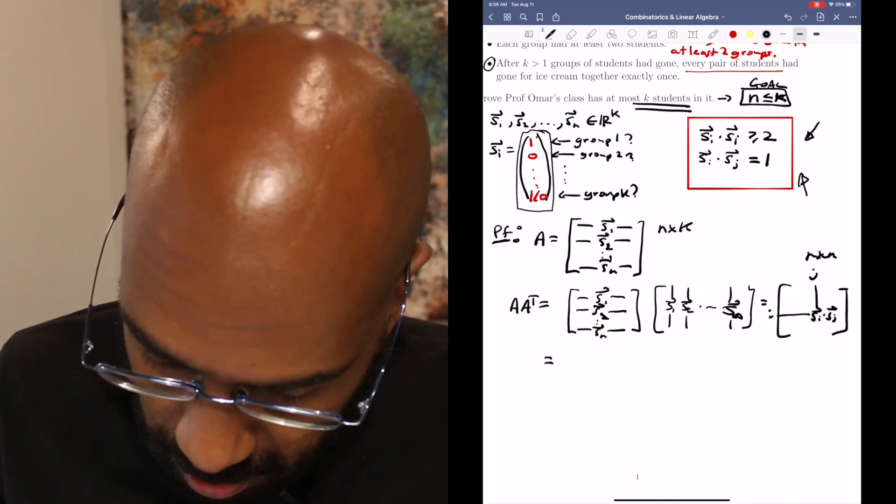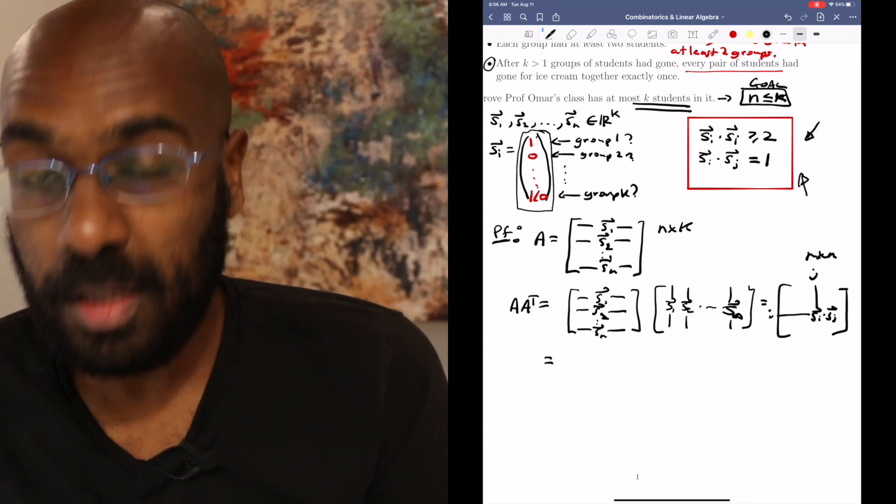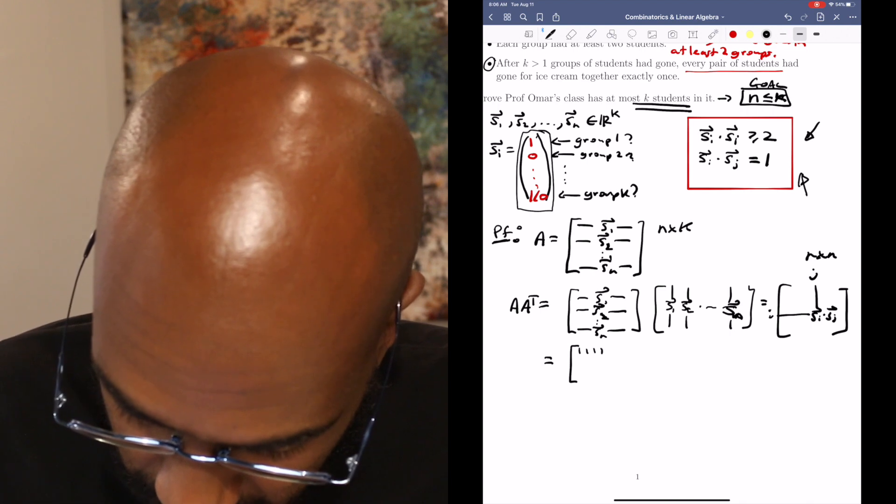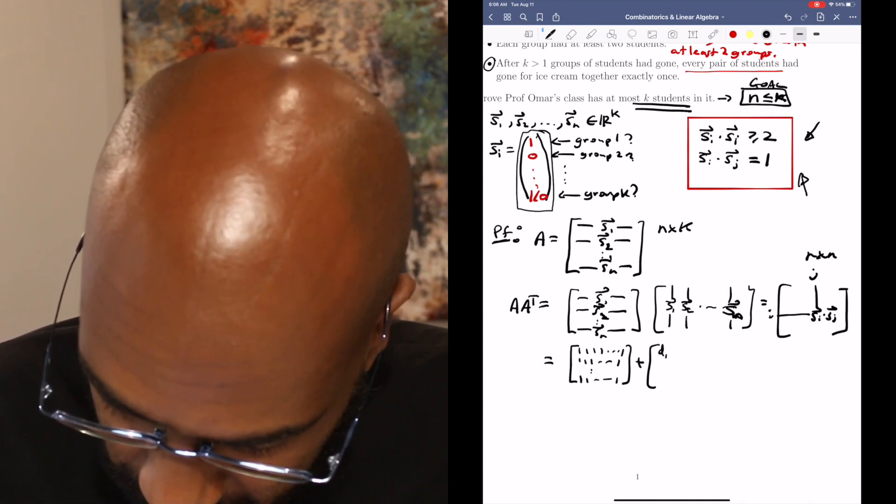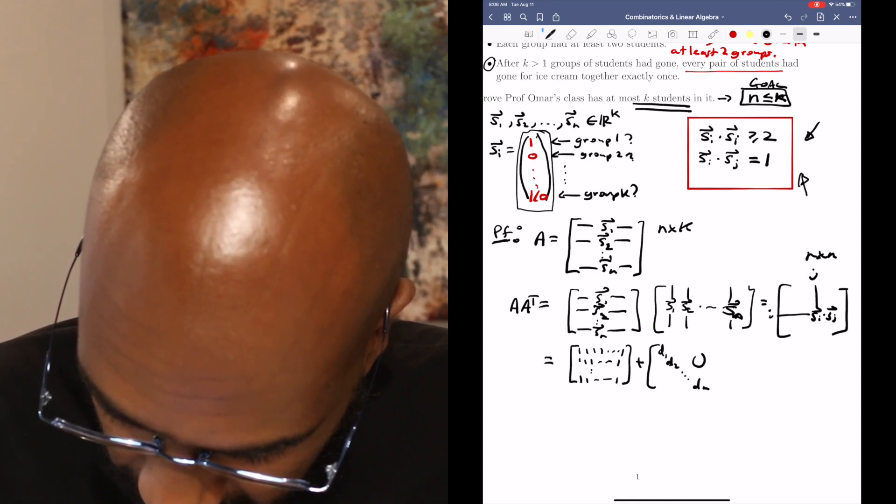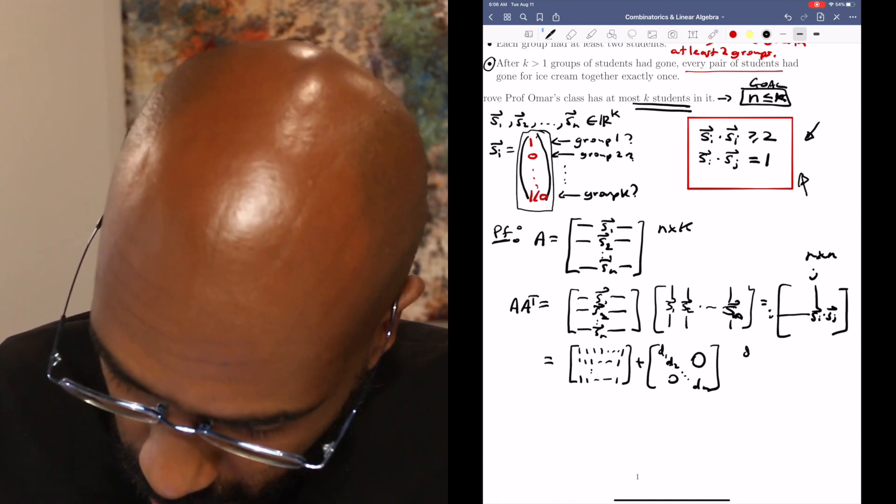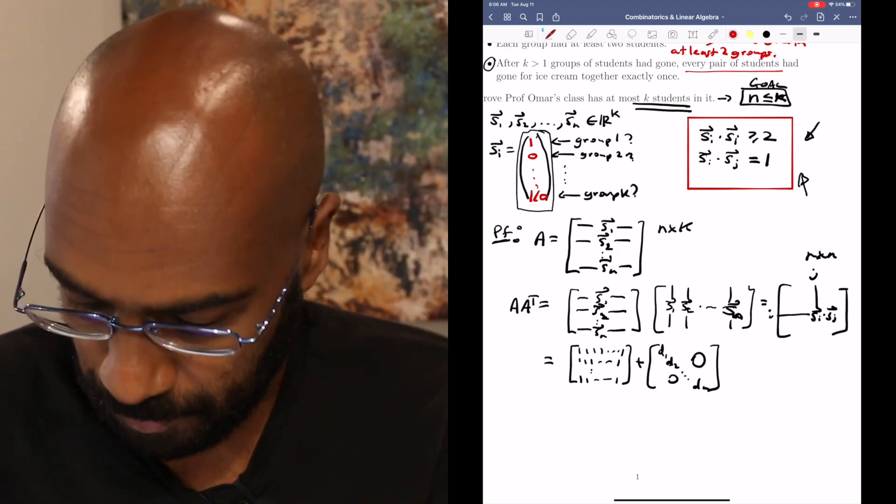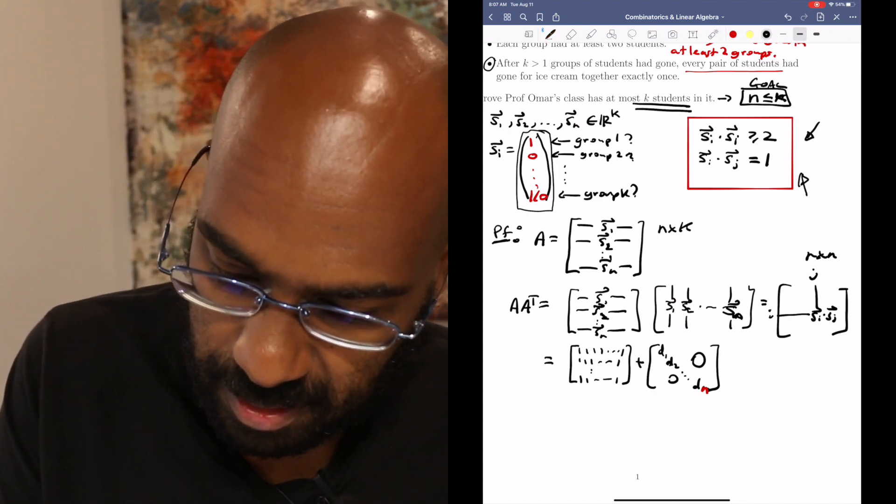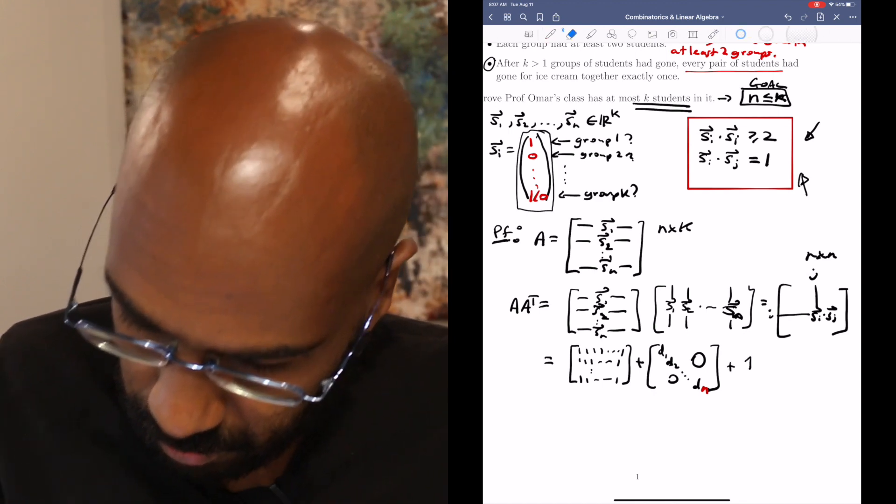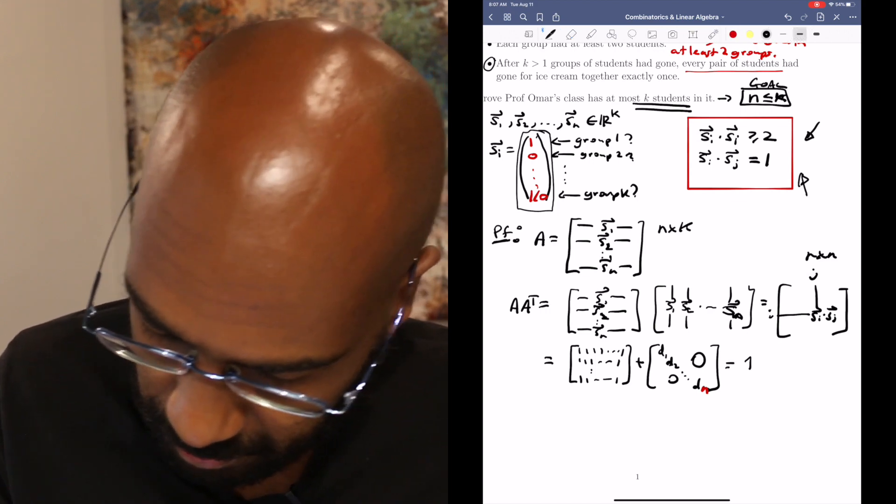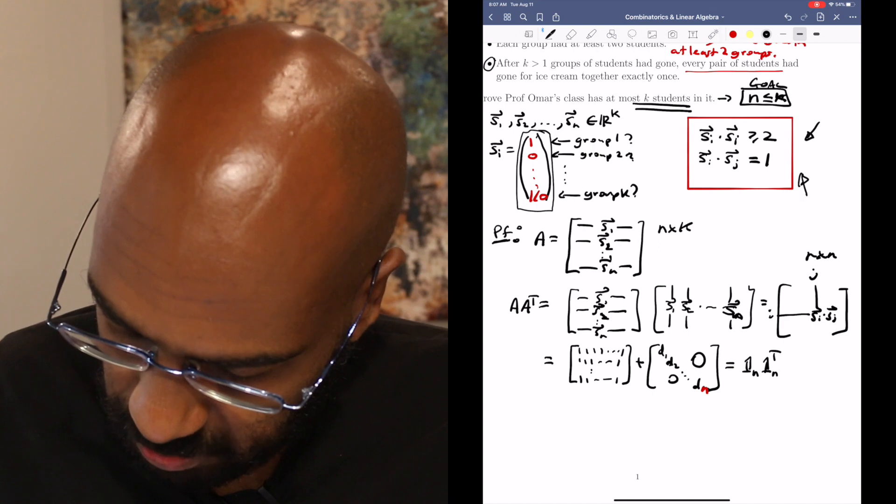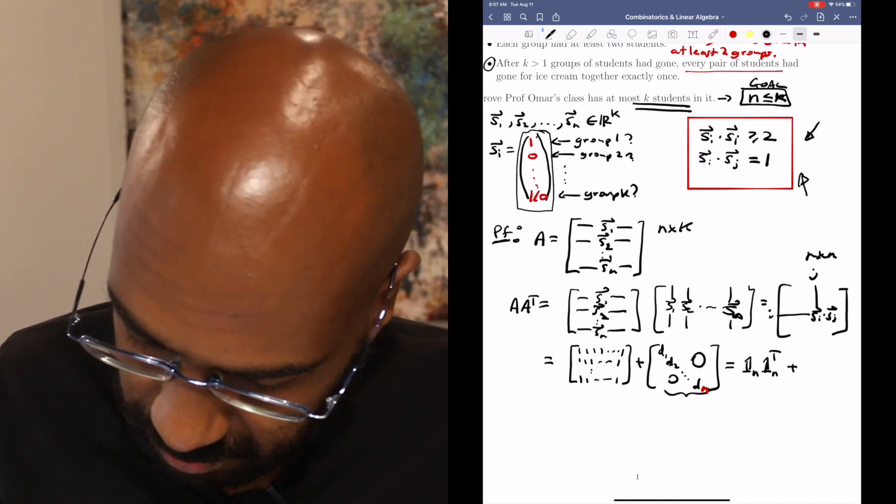Okay, so we can actually write this in a compact form. We'll have that all of the SI dot SJs are one except the diagonal ones which are at least two. So we can write this as the all ones matrix plus some diagonal matrix whose entries are all at least one because the diagonal entries of AA transpose are at least two. All right, so I can rewrite this as something a little easier. The one all ones vector multiplied by its transpose is the all ones vector of length N. So it's that one plus this matrix which I'm going to call D.